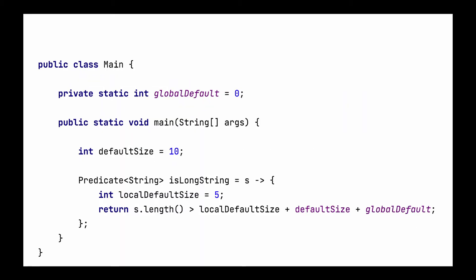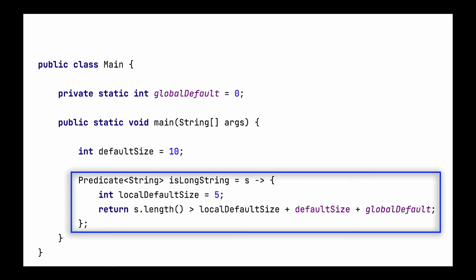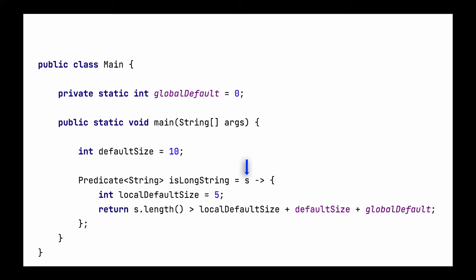So I have this class definition here. Let's go over and dissect it to see what I have written. The class has an instance variable called global default. The class has a main method and within the main method I have a variable called default size, and it also has a definition of a lambda. In this case it's a predicate and the lambda takes a single input variable s, and within the lambda body it also has a local variable called local default size, and the lambda body has an expression and we are returning the value of the expression.